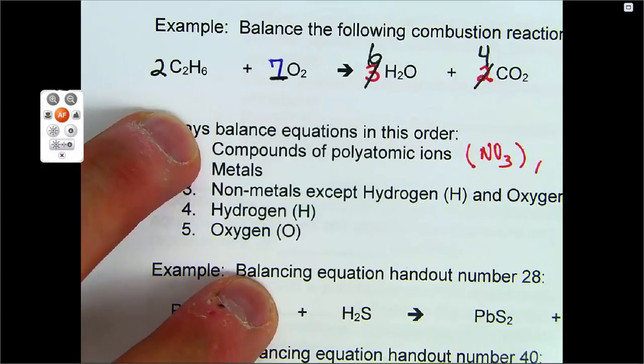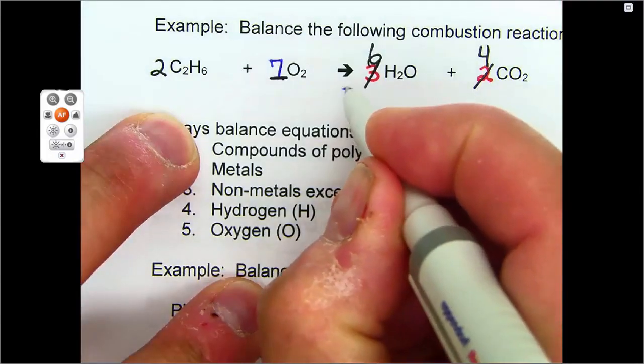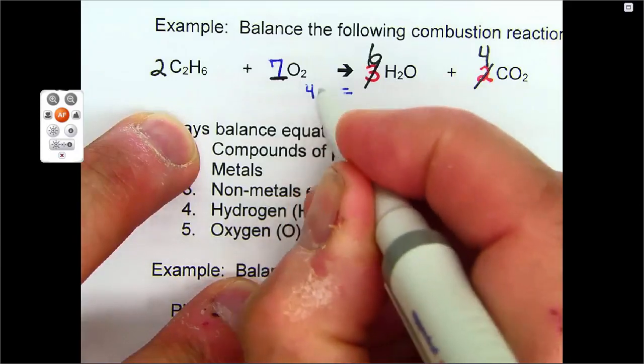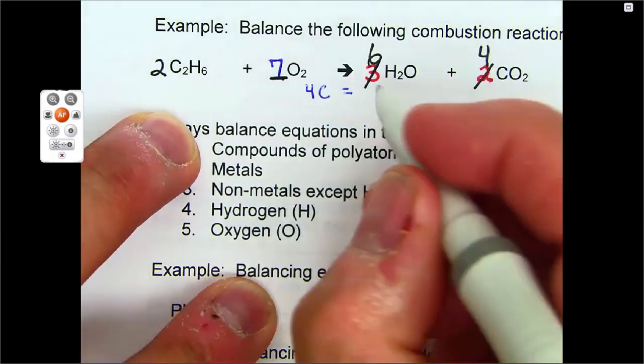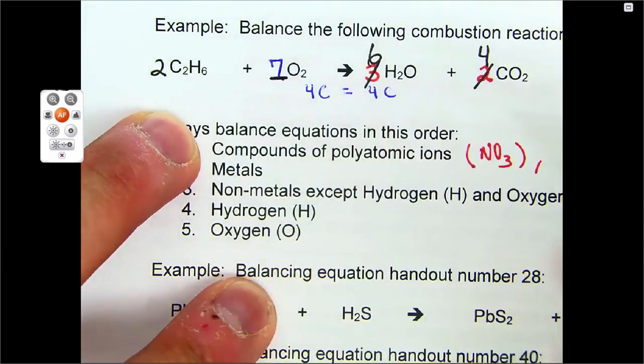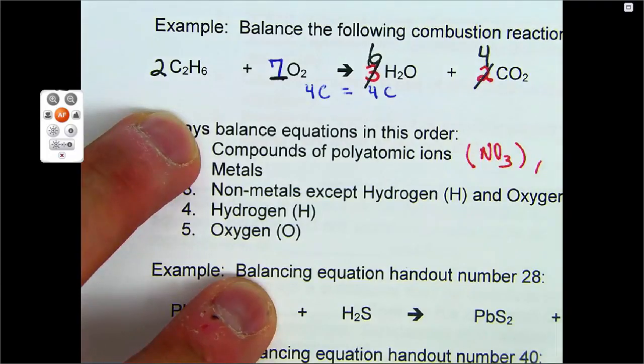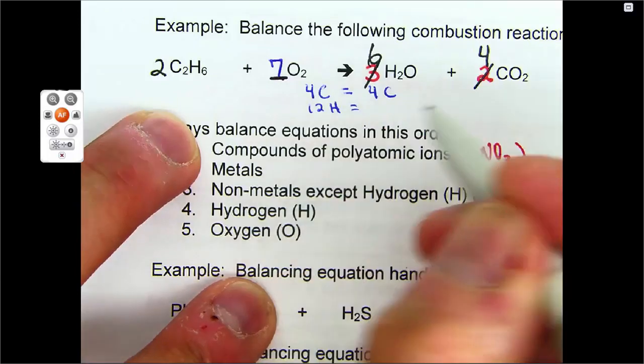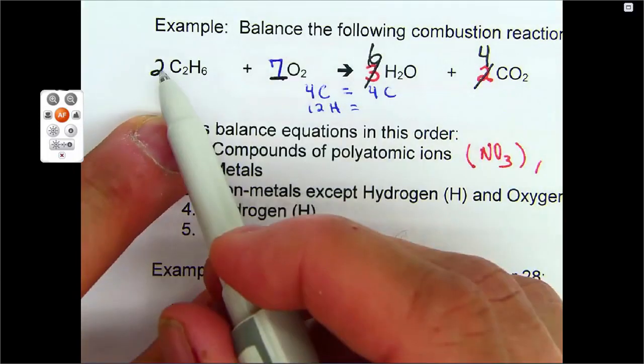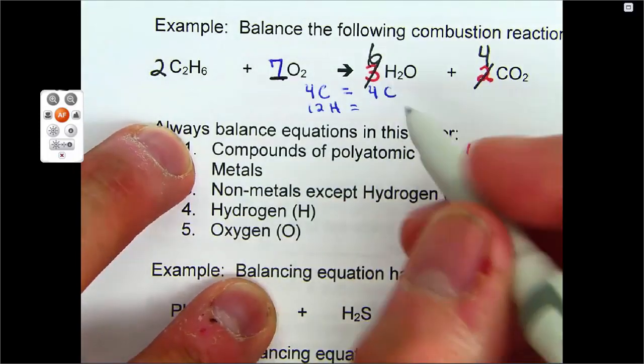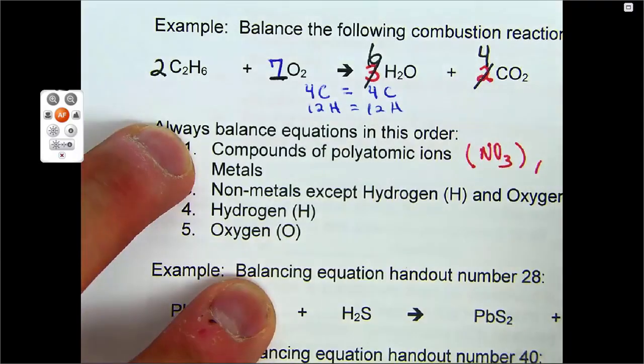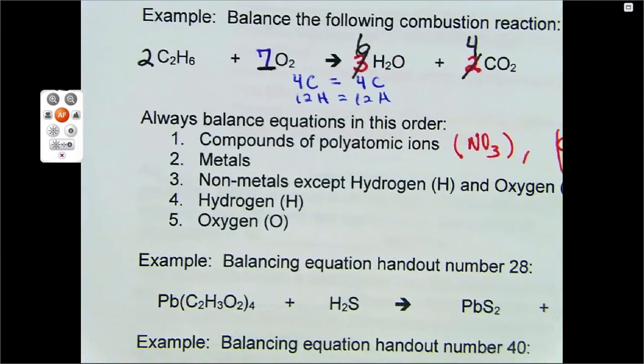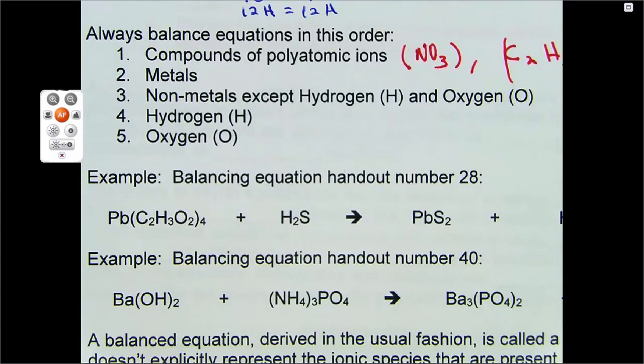Now, if you're new to balancing equations, you can always verify. Everything's got to be equal. So you can say four carbons on the left equals four carbons on the right. 12 hydrogen equals two times six, 12, six times two, 12 hydrogen, and so on with the oxygen. Okay. So let's go down here.